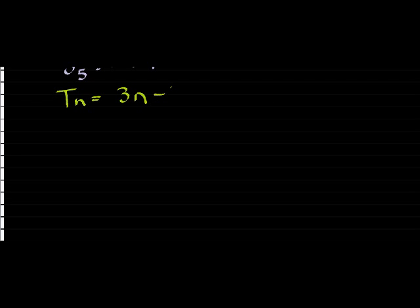So if a term Tn is given by 3n minus 1, and we are asked to find S4, it would be simply that S4 is equal to the first four terms: T1, T2, T3, and T4.